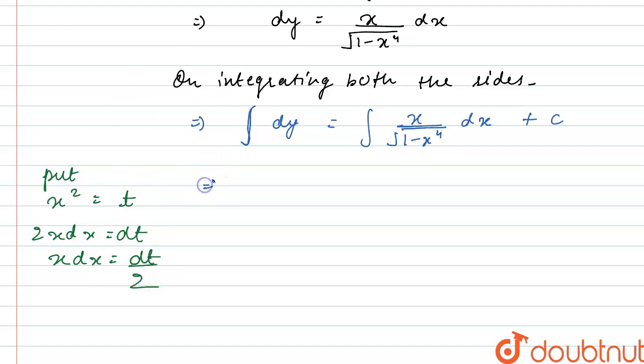So what this will become is integral of dy will be y equals to now integral of x dx will be dt by 2, and here we will get root over of 1 minus x square will become t, so this will become t square, plus we will have this constant c.